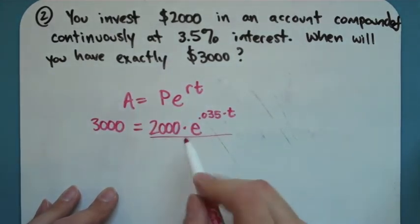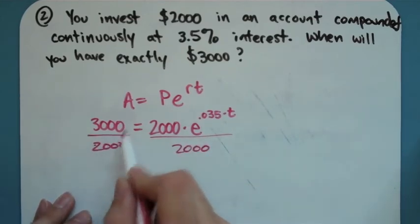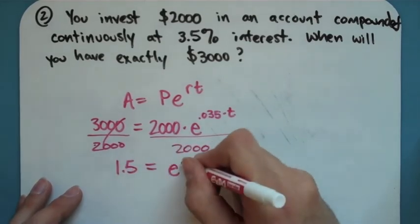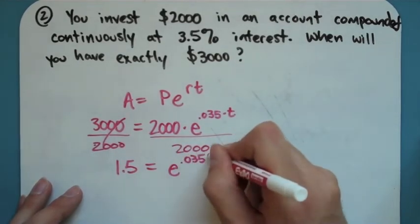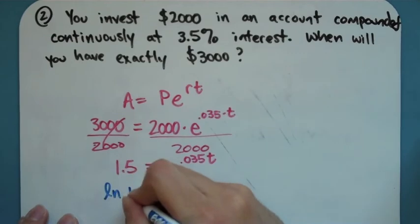So what I'm going to do first is divide by 2,000 because that's just sitting there. I can get rid of it. I'm going to get 1.5 equals e to the .035t. And to cancel out that e so I can solve for t, I'm going to take the natural log of both sides.